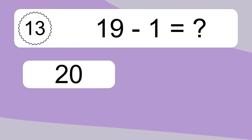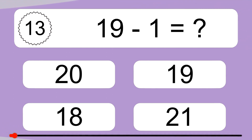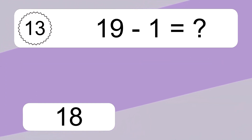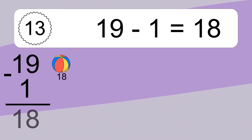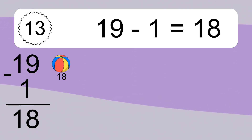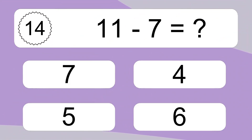19 minus 1 equals what? 19 minus 1 equals 18. Let's count it. 18. 11 minus 7 equals what?